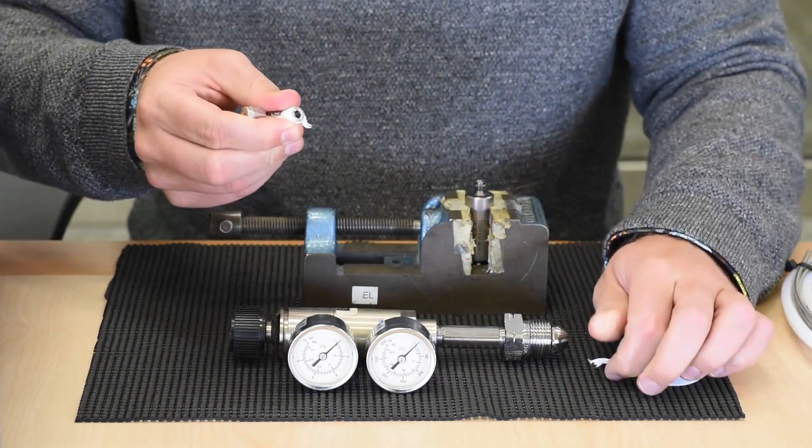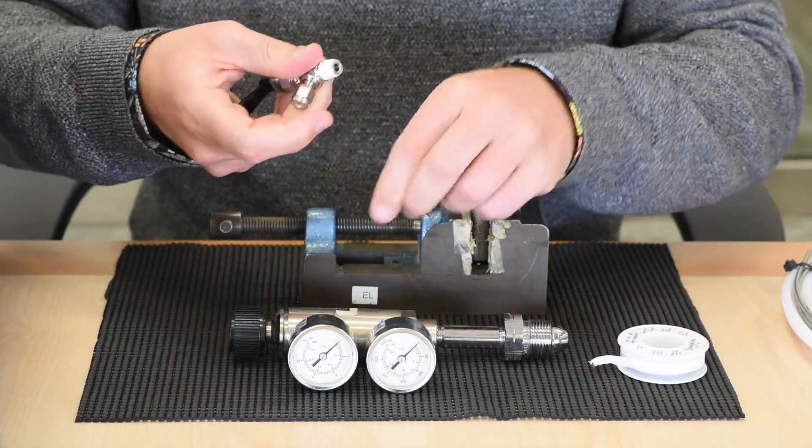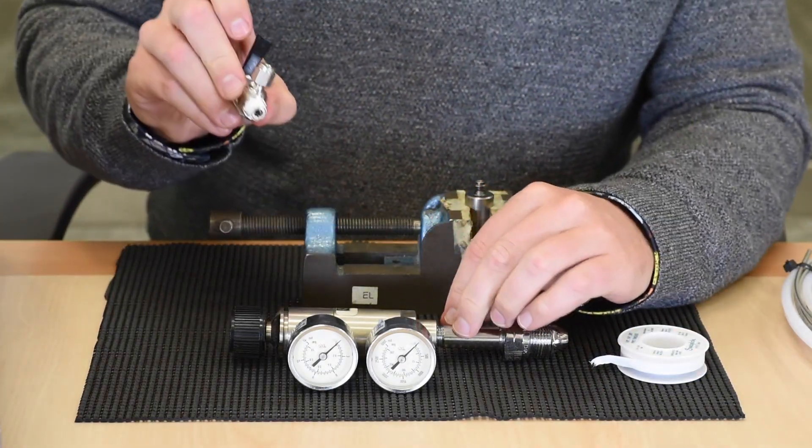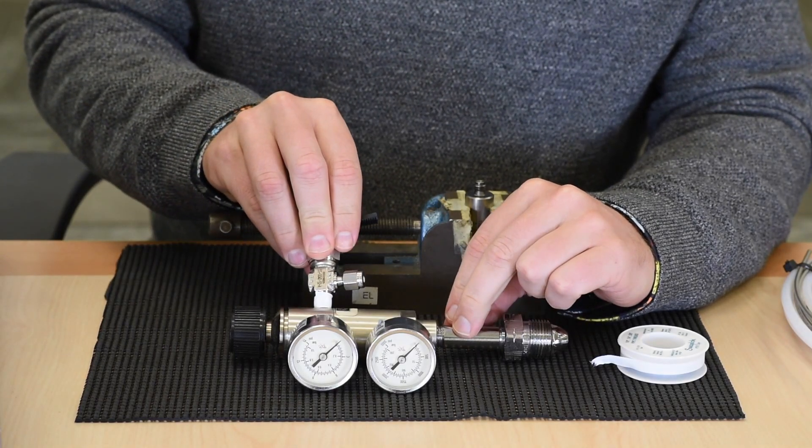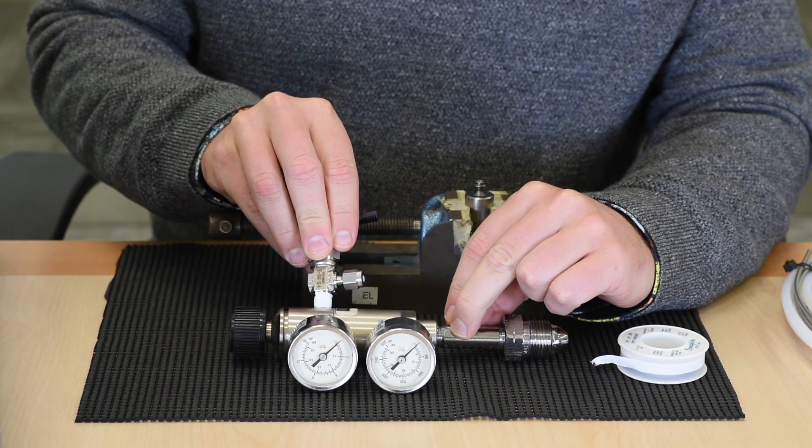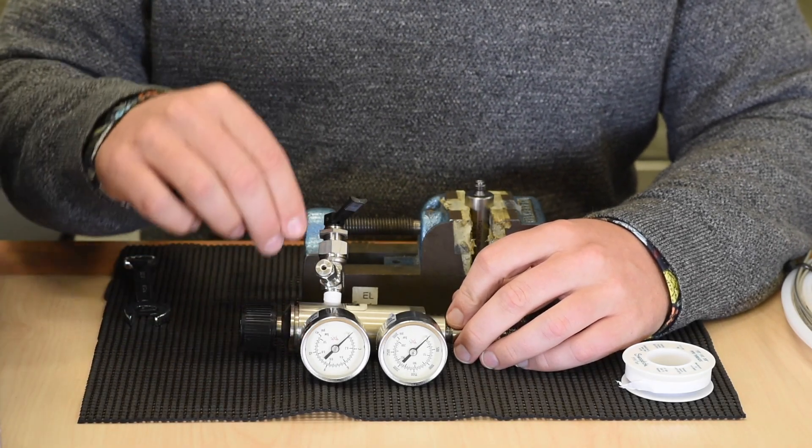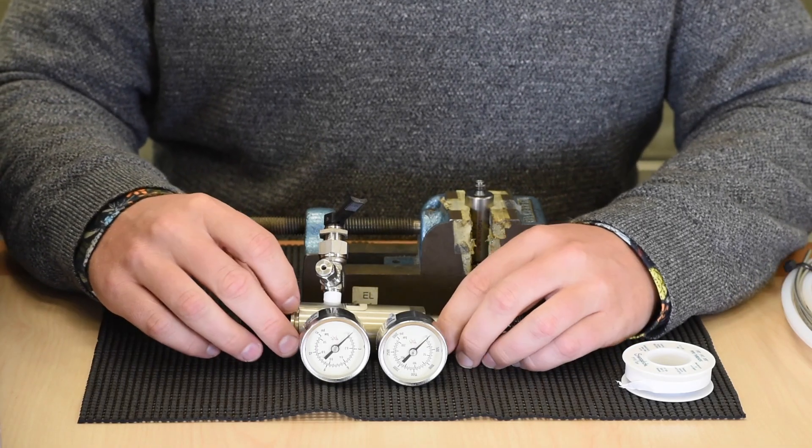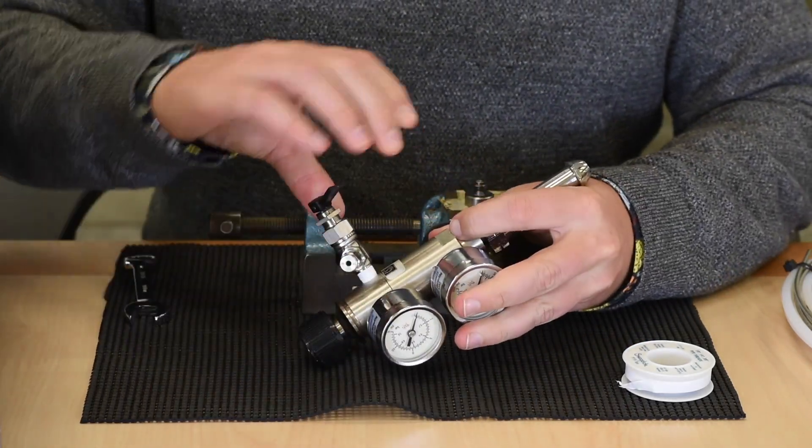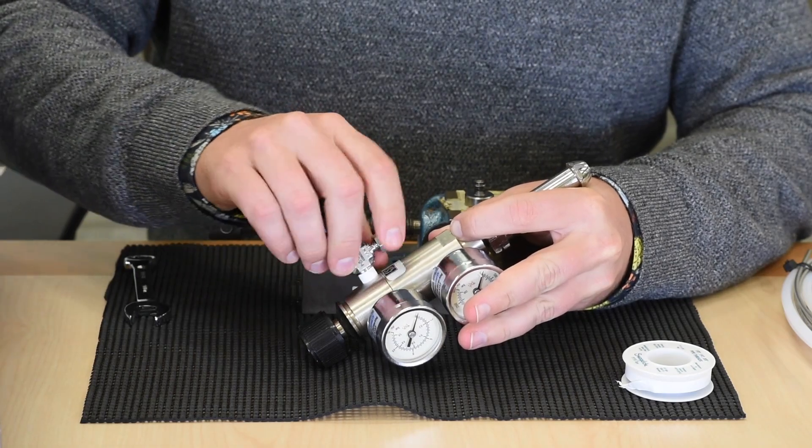Pull, smooth down that end, and then insert the toggle valve thread into the relevant thread on the regulator. Once you have the teflon tape on the thread and the thread inserted into the regulator, tighten it as far as you can clockwise.